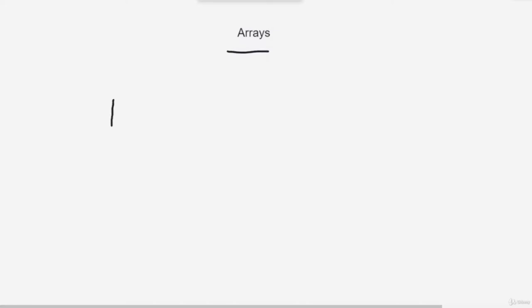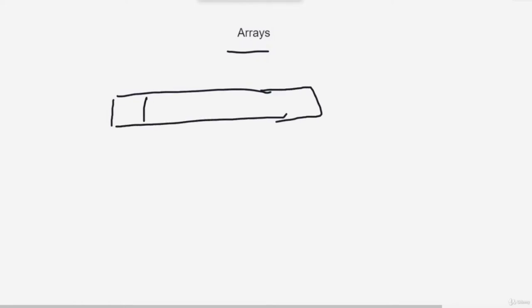Today we will learn about arrays, which are one of the most basic and simple types of data structures. Arrays are a collection of items stored in a contiguous manner — you can store different items in different data blocks arranged side by side. These can be of any data type: string, character, or integer.